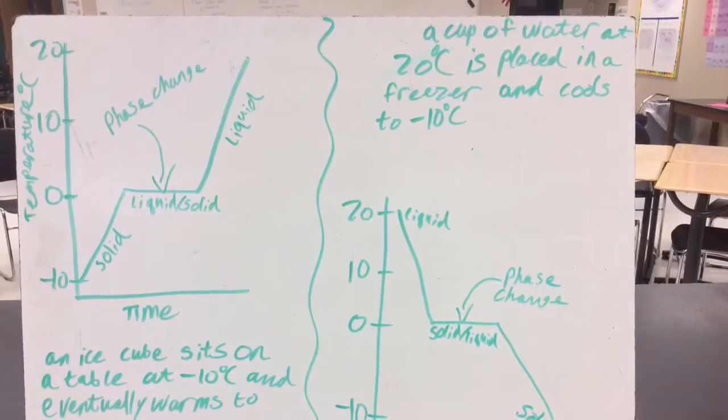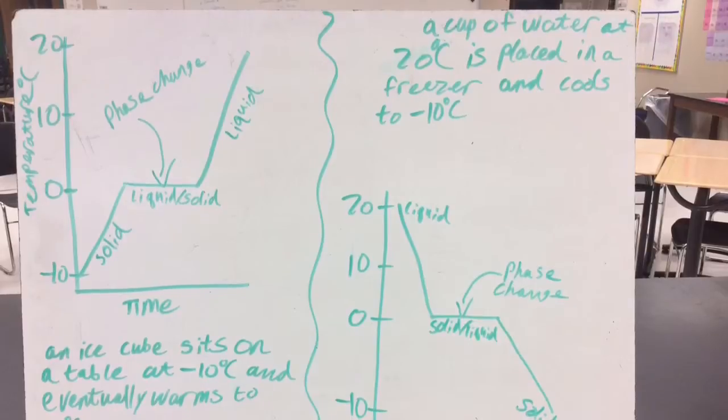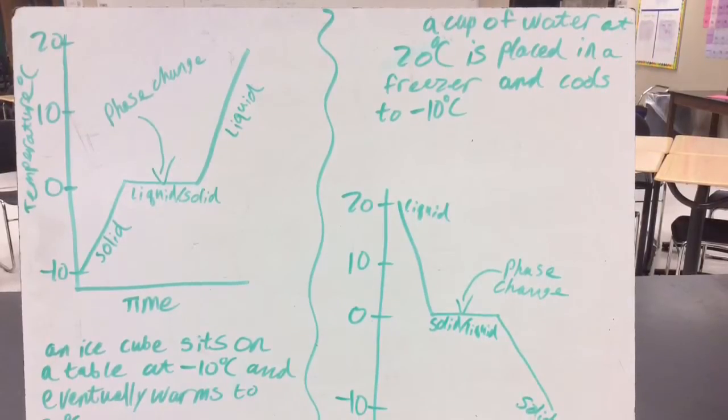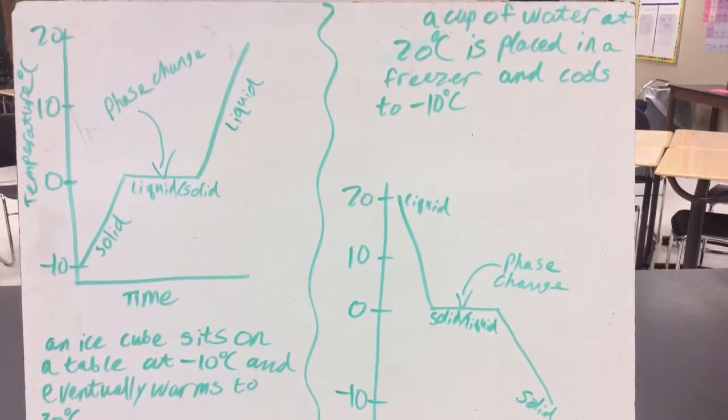For phase change, the line in the graph will go flat. When a substance crosses a phase change temperature as they are increasing temperature, the solid will begin to form into a liquid. And for decreasing temperature, the liquid will begin to form into a solid.